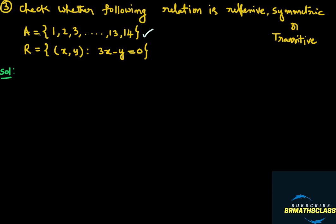First, what elements are there in set A? Set A contains 1, 2, 3, 4 — yes, 4 is there — 1, 2, 3, 4, 5, 6, 7, 8, 9, 10, 11, 12, 13, 14. These are the elements in set A. R is a relation given in set builder form. I will write this relation in roster form so that it is easy to check whether this relation is reflexive, symmetric, or transitive.